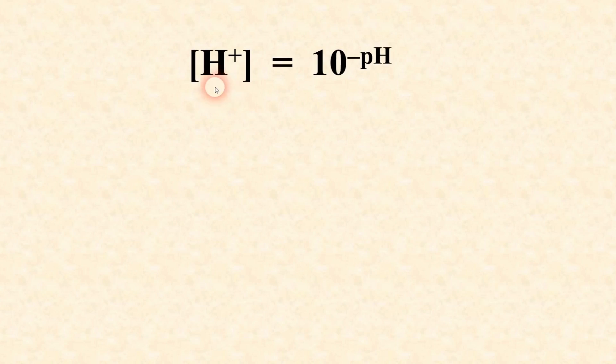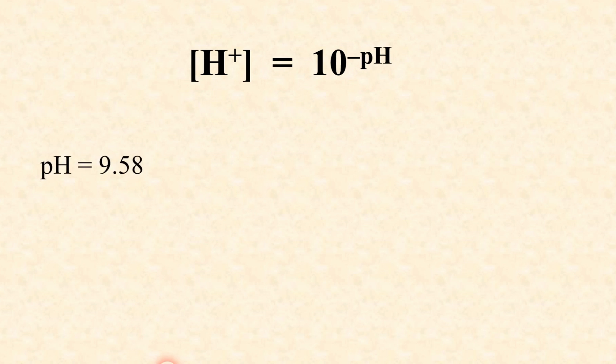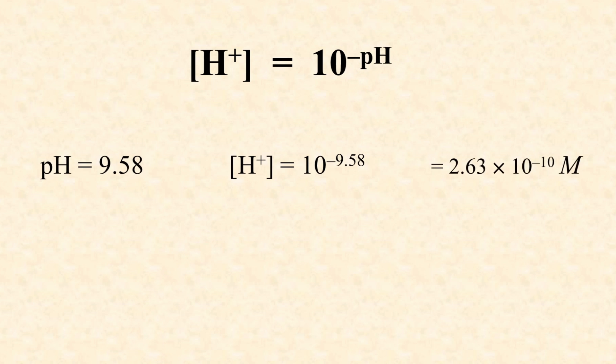The next three equations you need to know are from Unit 8, the acid-base unit. The first is an equation you probably could figure out from the definition of pH, which equals the negative log of the hydronium ion concentration. However, they don't give you the equation for going in the other direction — calculating hydronium concentration from the pH. The hydronium ion concentration equals 10 raised to the negative pH power. This is one they expect you to know, so it won't be directly printed on the equation packet.